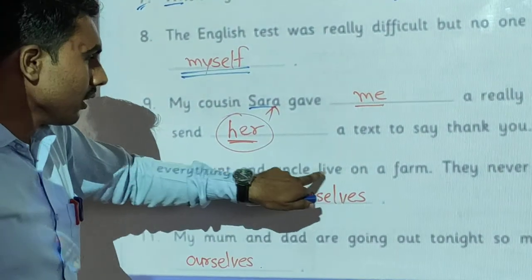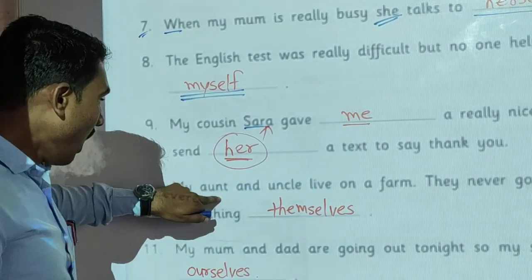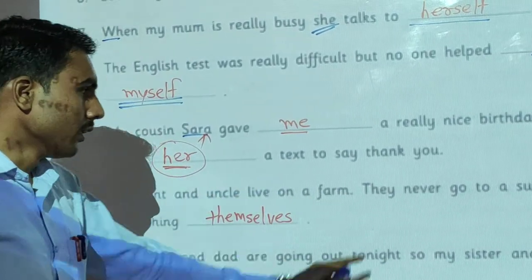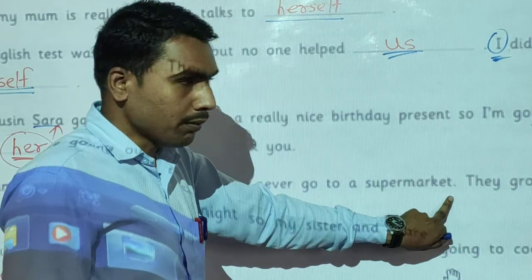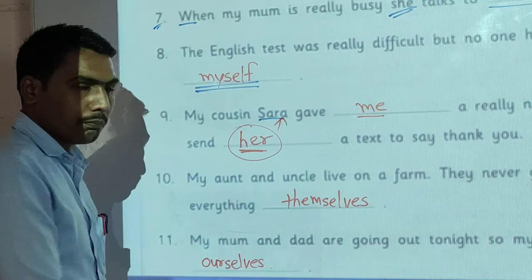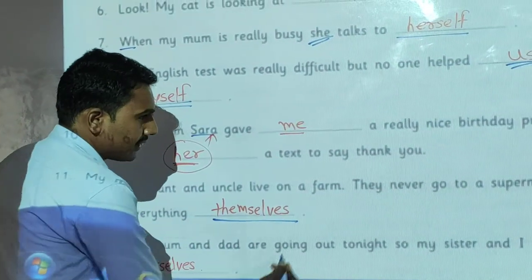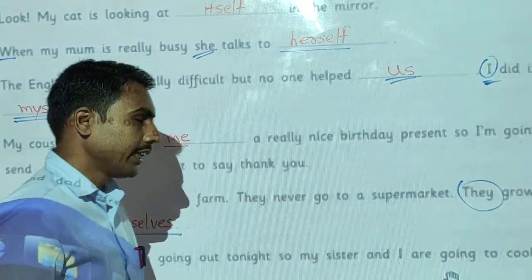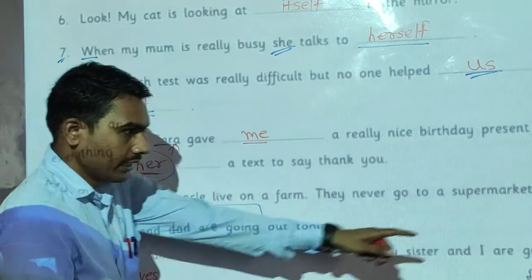My aunt and uncle live on a farm. They never go to the supermarket. They grow everything themselves. We use 'themselves' for 'they'. 'They' is the subject, and the reflexive pronoun we use for 'they' is 'themselves'.